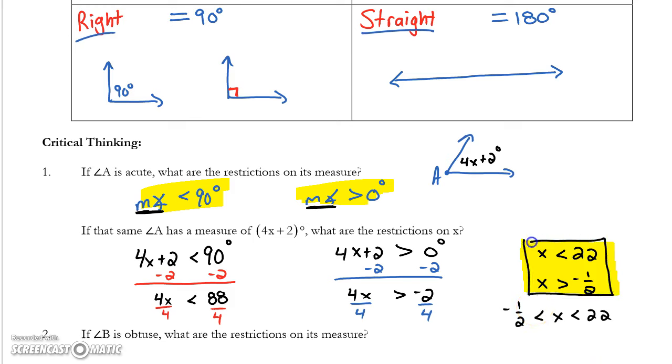I'll get you started with number 2, and then ask you to finish it. The process is the same. The idea is the same, except now I'm telling you that the angle is obtuse. So, this time, the restrictions on the measure of the angle, since it's obtuse, it must be greater than 90 degrees. But at the same time, the measure of that angle must be less than 180 degrees.